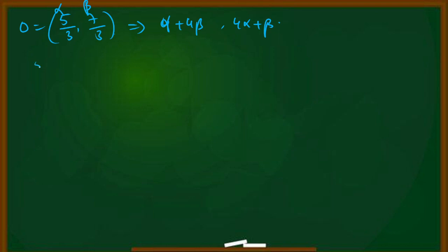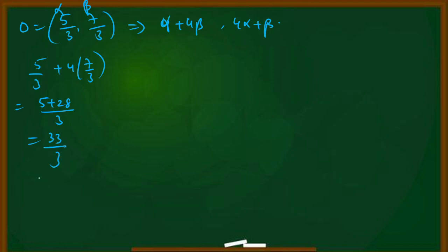First root: alpha + 4 beta = 5/3 + 4·(7/3) = 5/3 + 28/3 = 33/3 = 11. So the first root is 11.